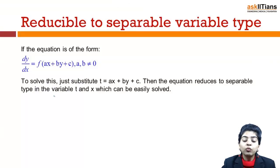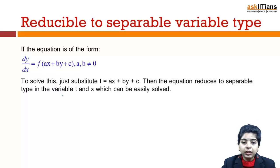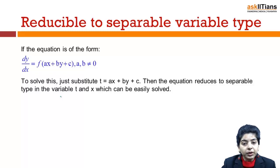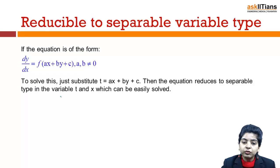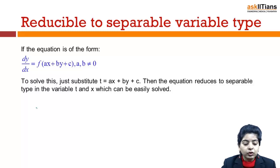We have the reducible to variable separable type. That just means initially you'll have an equation which is not in the separable variable type, but with the help of certain kinds of substitutions we'll be able to reduce it to the variable separable type, and then we'll be able to find out the solution as we proceeded in the case of separable variable type.